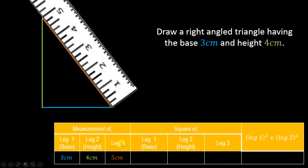Similarly, when you draw the other triangles, the third leg of those will also automatically come out to some number. You measure it and write the third leg value in the same way. So the starting three columns we have to fill in this way by measuring.